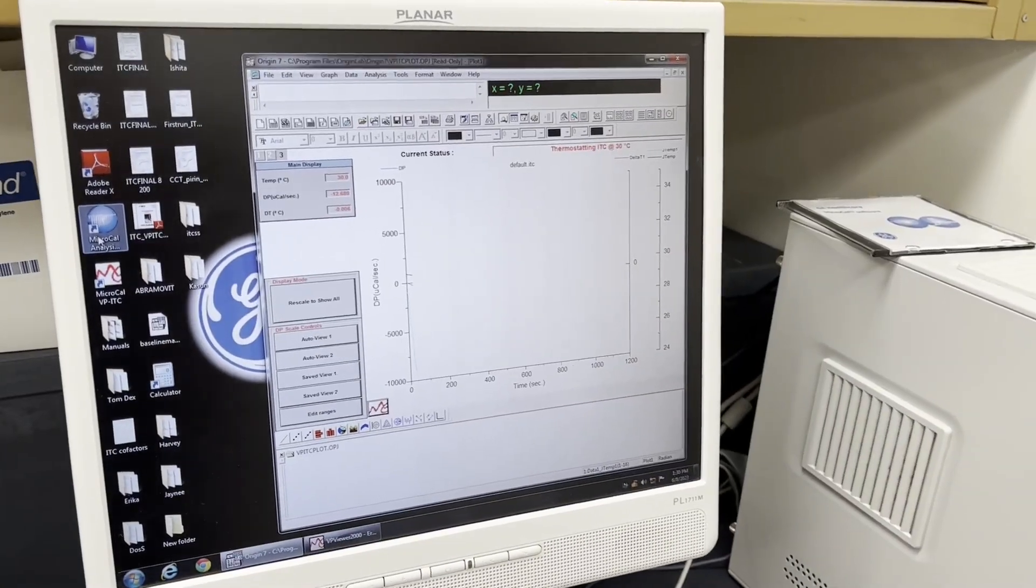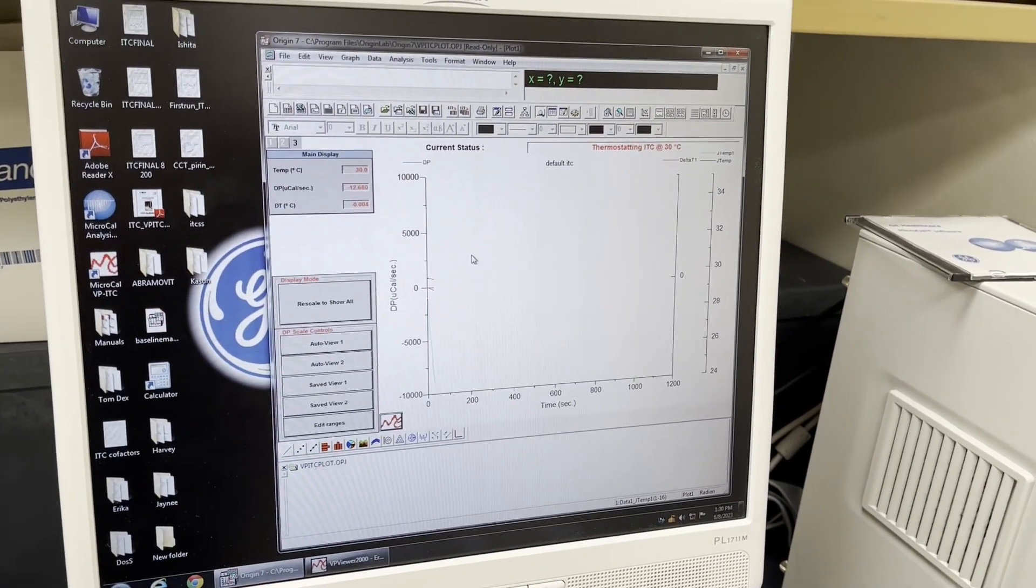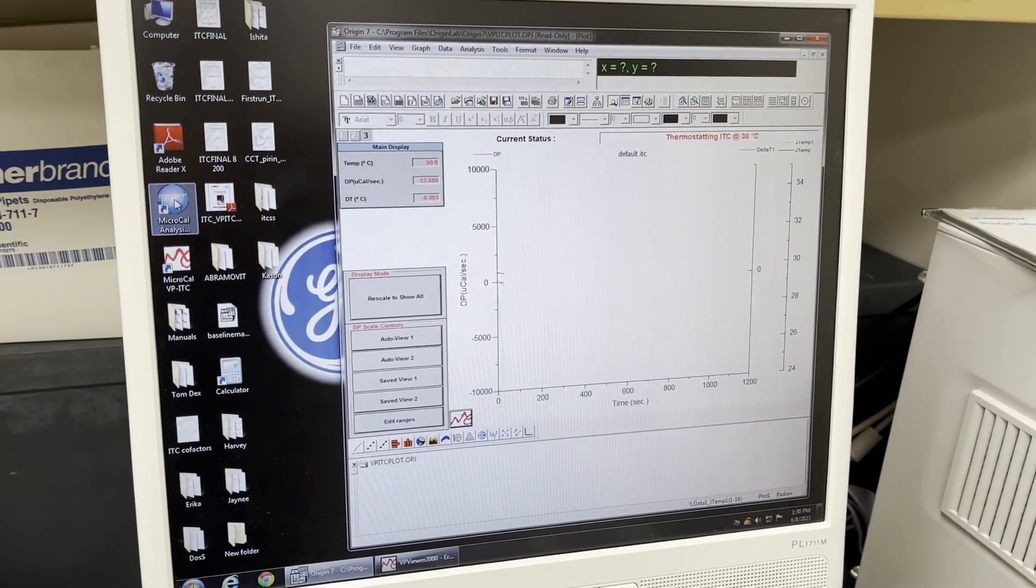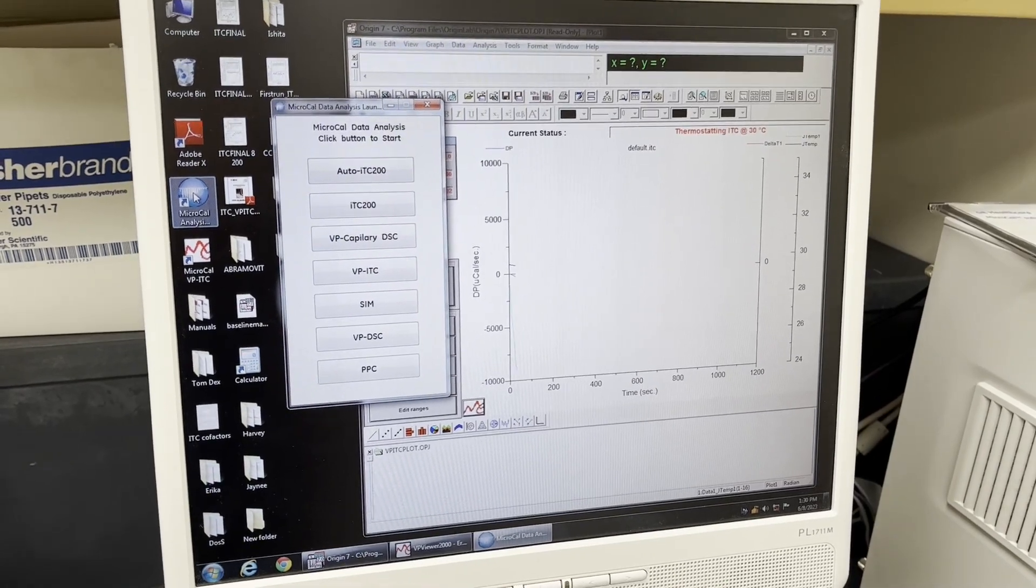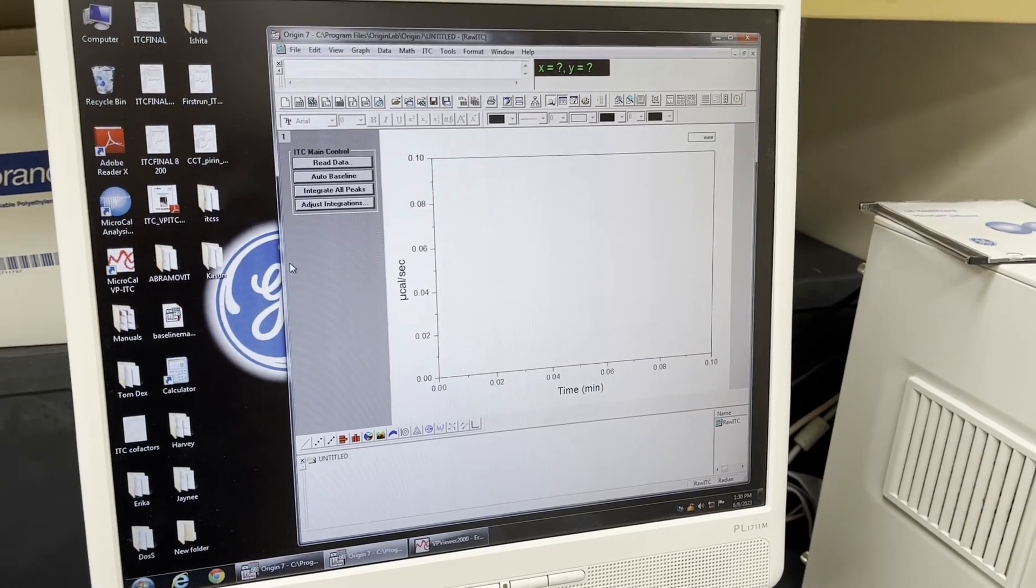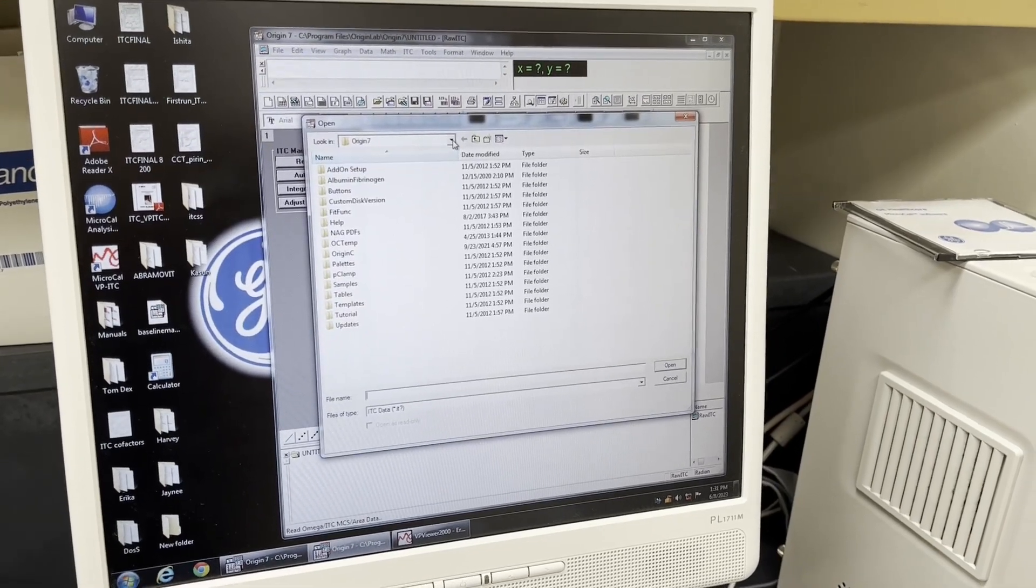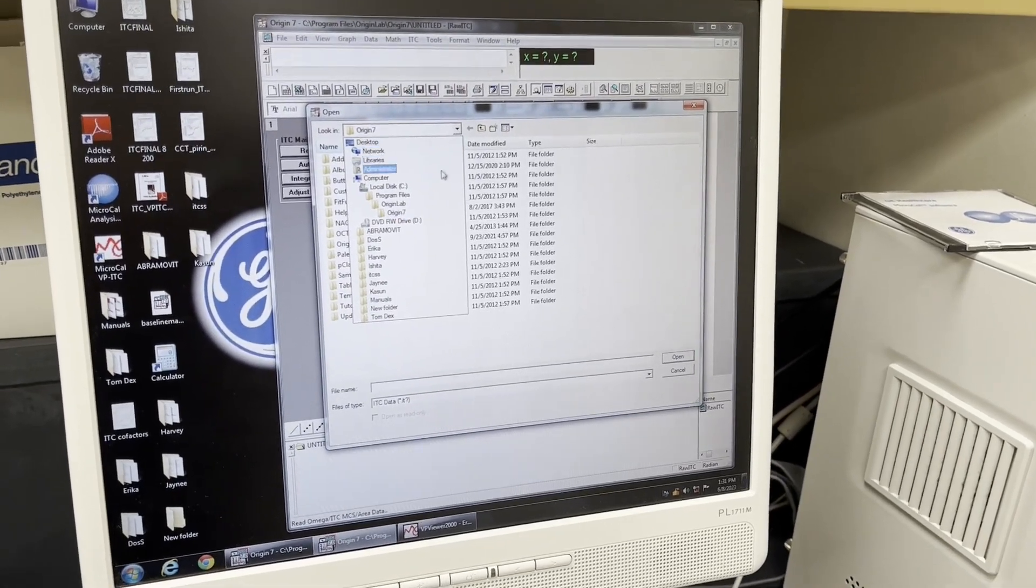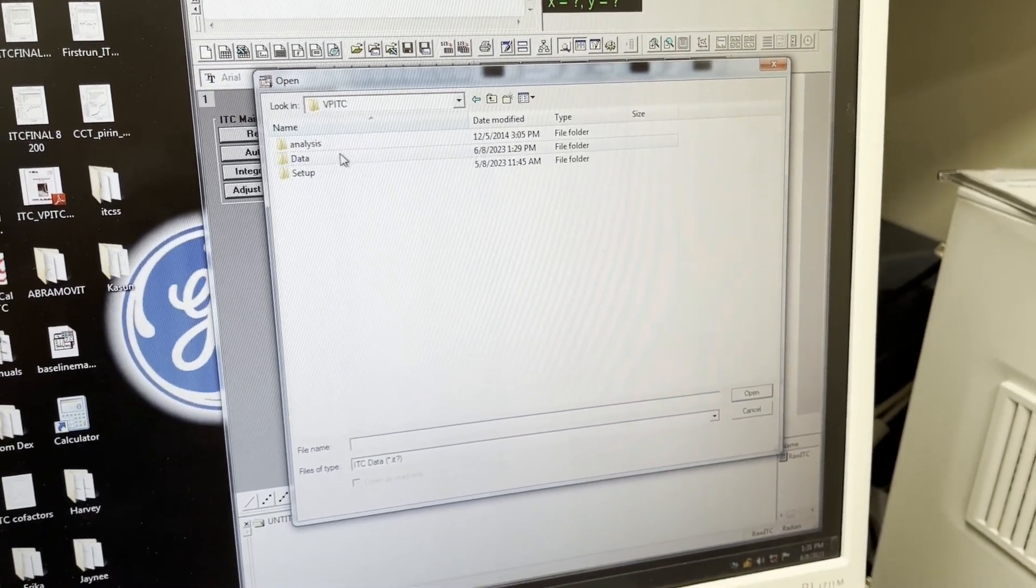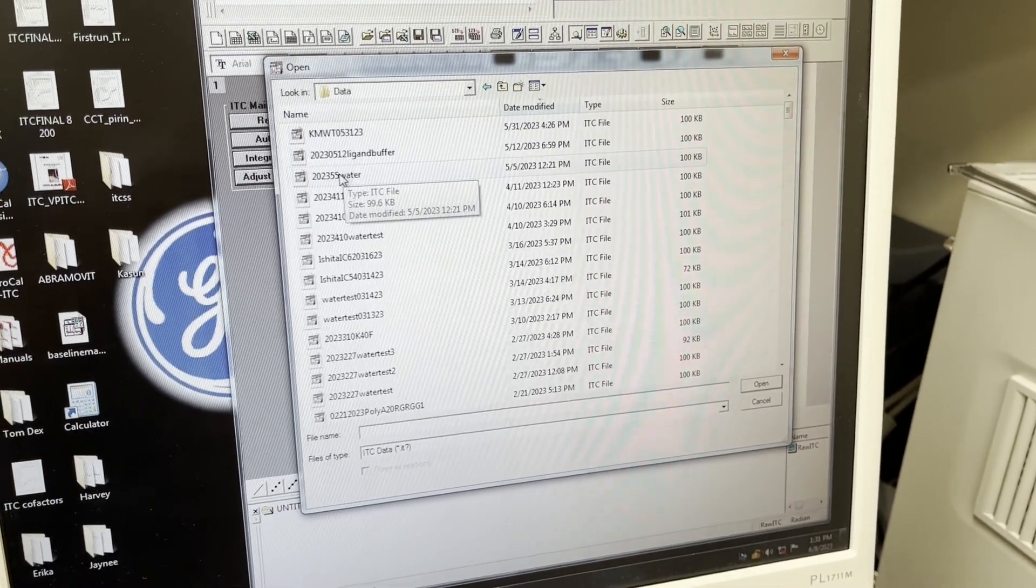Once your run is complete you will see the raw data. If you would like to analyze your data, what you want to go to is this piece of software here, the microcal analysis launcher. You want to pick the BPITC because that's the instrument that we're using. This is based on Origin software. What you want to do is click read data and it's a little cumbersome to find your data. You want to go to C, VPITC data, and I'll just show you a previous water run that I performed.